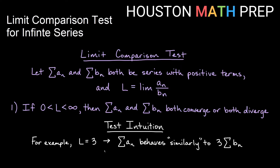Looking at why they will both have the same behavior: say the limit is three. So you have the terms of a sub n on top, the terms of b sub n on the bottom, and after hundreds or thousands or millions of terms, this expression eventually looks about like the number three. That's saying the top looks like pretty much three times the bottom. So after some point, the series that we started with behaves like three times the other series. If this series is an infinite amount, then we would have an infinite amount. If the series was some real number, then this would behave like three times that real number. This doesn't mean they sum to three times each other — it just means that at some point it starts looking like three times the other series. So they behave similarly in that they both converge or both diverge, but won't actually be a direct multiple of one another.